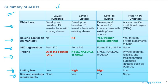The ADR summary table has rows for objectives, raising capital on the U.S. market, SEC registration, trading, listing fees, and size and earnings requirements. The columns are Level 1 (unlisted), Level 2 (listed), Level 3 (listed), and Rule 144A (unlisted). Some items are highlighted in bold red and bold green because there are practice questions based on these details.